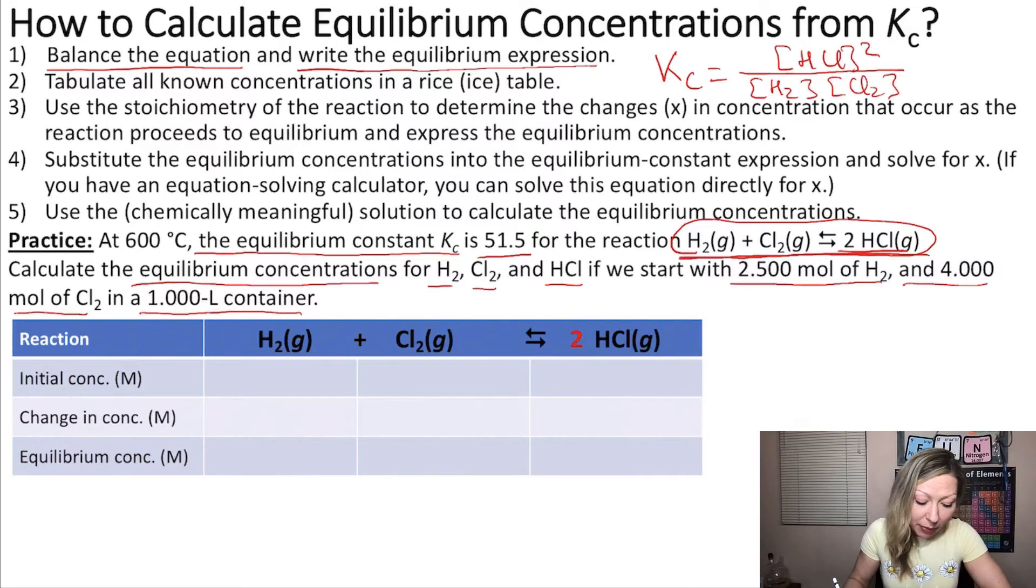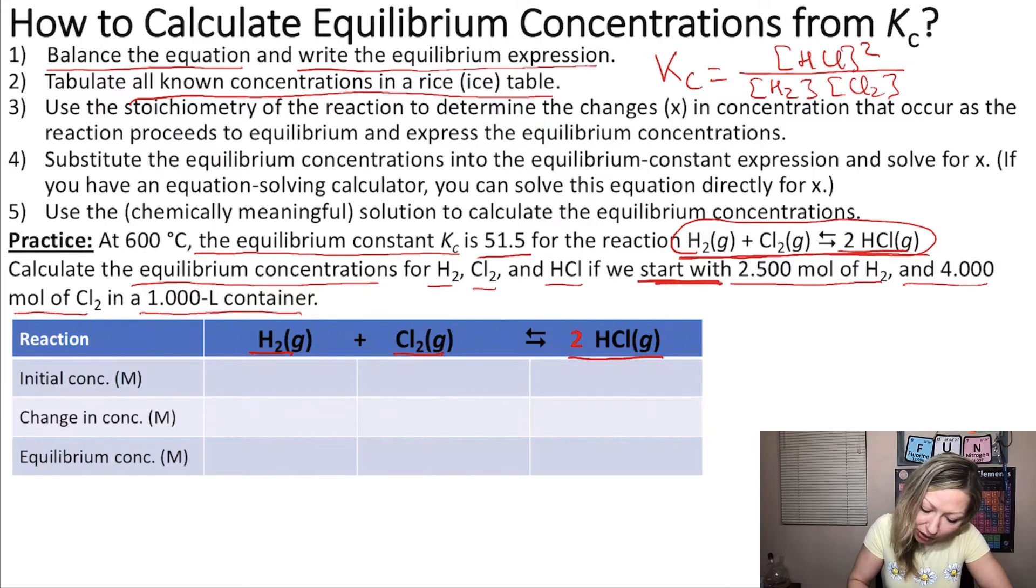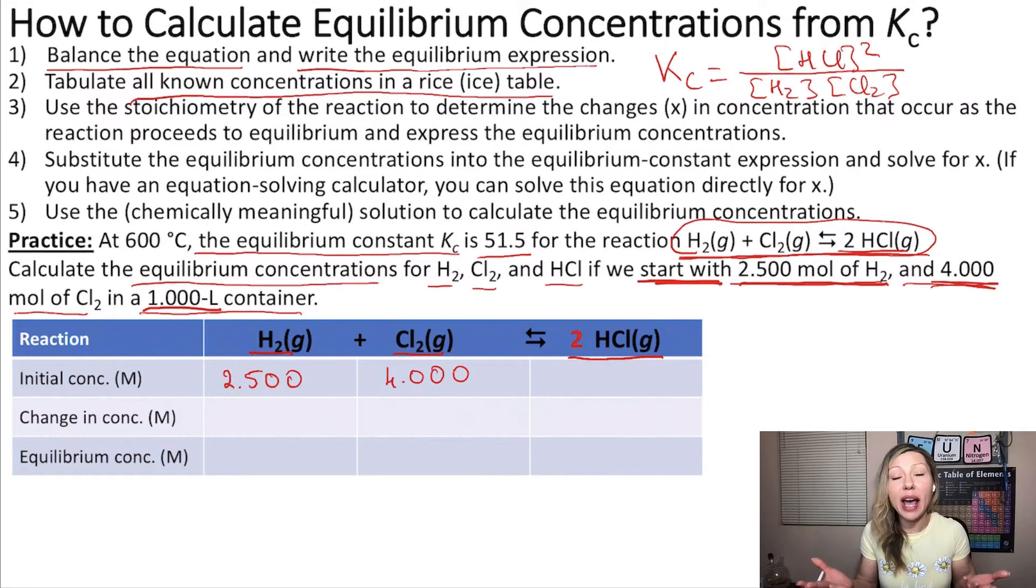Now we need to tabulate all known concentrations in a RICE table. So the reaction is already there. We have the hydrogen gas, Cl2 gas, and the 2 moles of HCl gas. So let's add the concentrations that we know. We know the starting concentrations of H2, it's 2.5 moles and we have a 1 liter container. So it's 2.5 mole per liter, so let's add that 2.500. Then we have 4 moles of Cl2, 4.000 moles. And how much do we have of the product at the beginning? Zero.